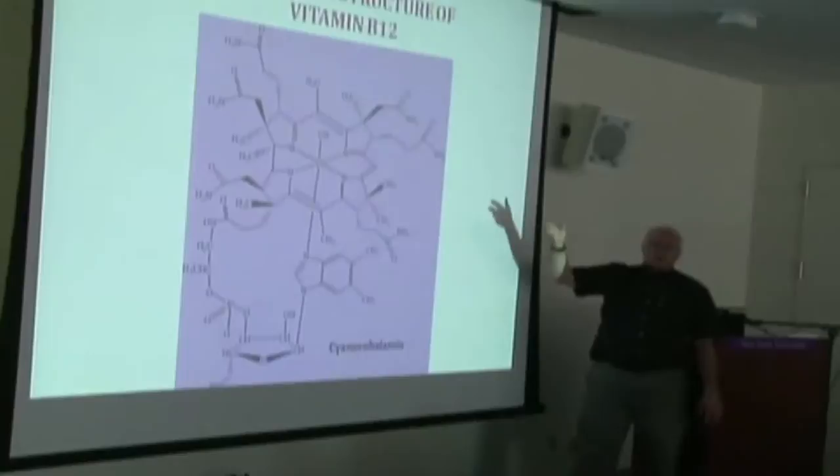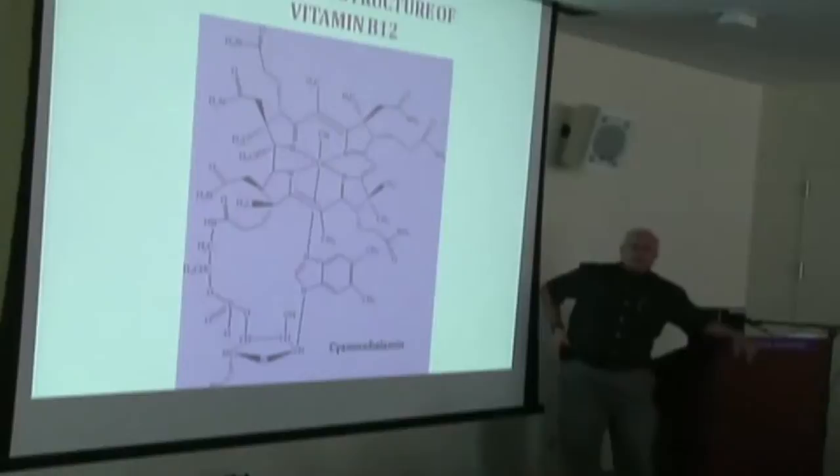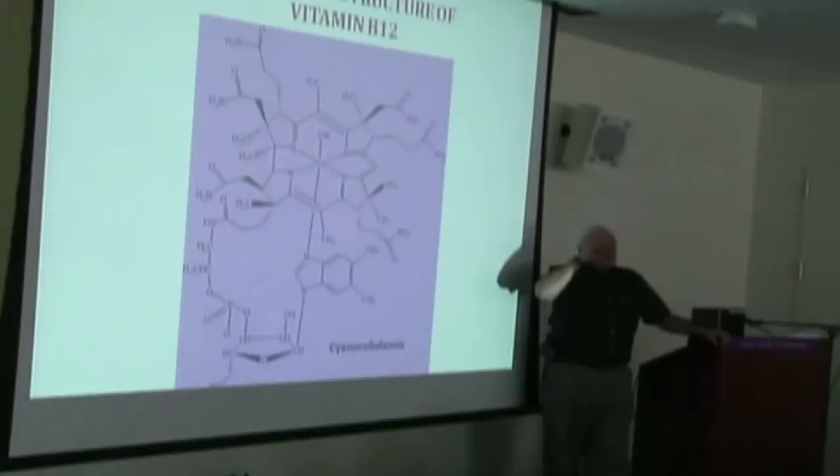So the cobalamins are B12s, and the cyano has a cyano group. There's also hydroxo, aquo, there's also glutathionele, a tripeptide that's bonded, a very newly discovered one, and also an adenosyl. So it functions at the various levels for certain coenzymes as a coenzyme that's necessary in order to actually transfer methyl groups.